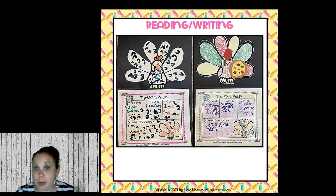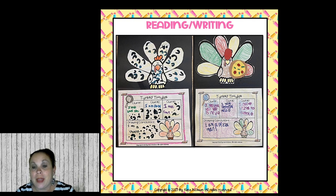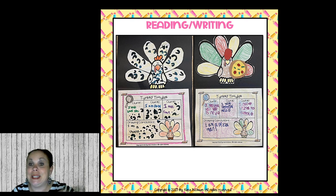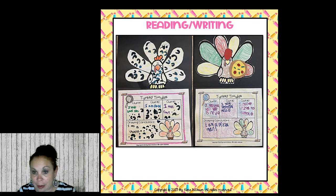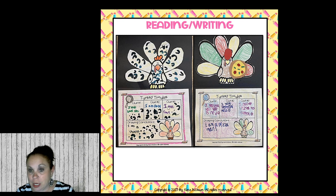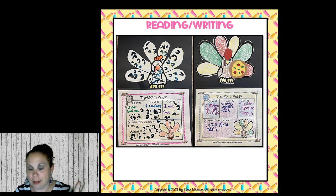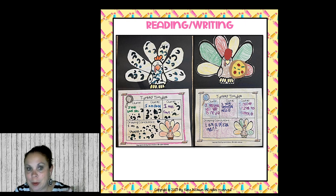In November we read Turkey Trouble and talked about inferencing. Students disguise their own paper turkey — one girl made a cheetah, another made a pizza man — then write three clues and a 'drawing conclusions' sentence at the bottom. For example: 'I have black spots, I am yellow, I am fast — I am a cheetah.' Or: 'I have a red hat, I have pepperoni pizza, I deliver pizza to people — I am a pizza man.' So reading and writing go together really well for inferencing.